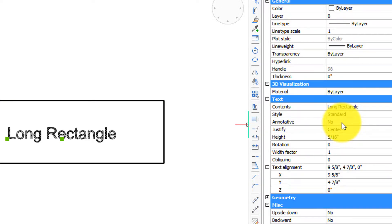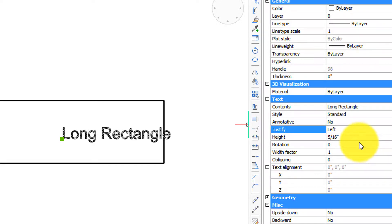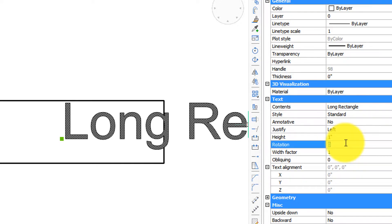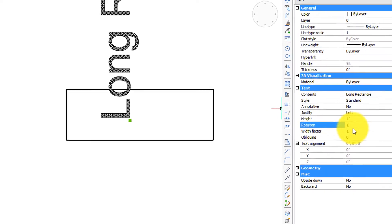Change the style. Change the justification. So it's justified left. Change the height. Change the rotation angle. There's 180.